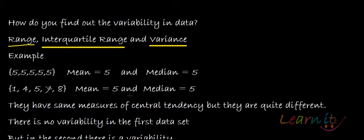The point is that if you look at it, these two data sets, they have same measures of central tendency. Mean is 5, median is 5. But they are actually quite different as you could see it. There is no variability in the first data set, but there is a lot of variability in the second data set.